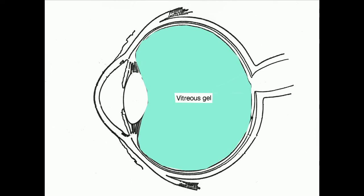Inside the eye, there's a jelly-like substance called vitreous gel. This substance makes the eye round in shape.